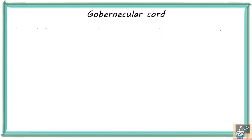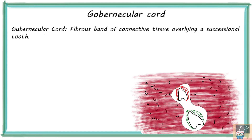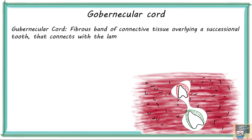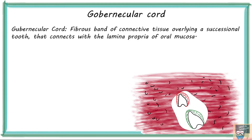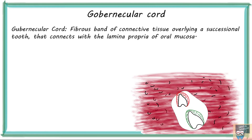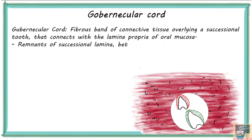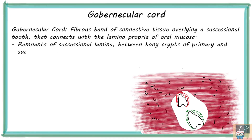Let's start with gubernicular cord theory. According to this theory, the gubernicular cord is a fibrous band of connective tissue overlying a successional tooth that connects with the lamina propria of oral mucosa. Contraction of this ligament causes the tooth to erupt, though later it was found to be a remnant of successional lamina between bony crypts of primary and permanent teeth bud.